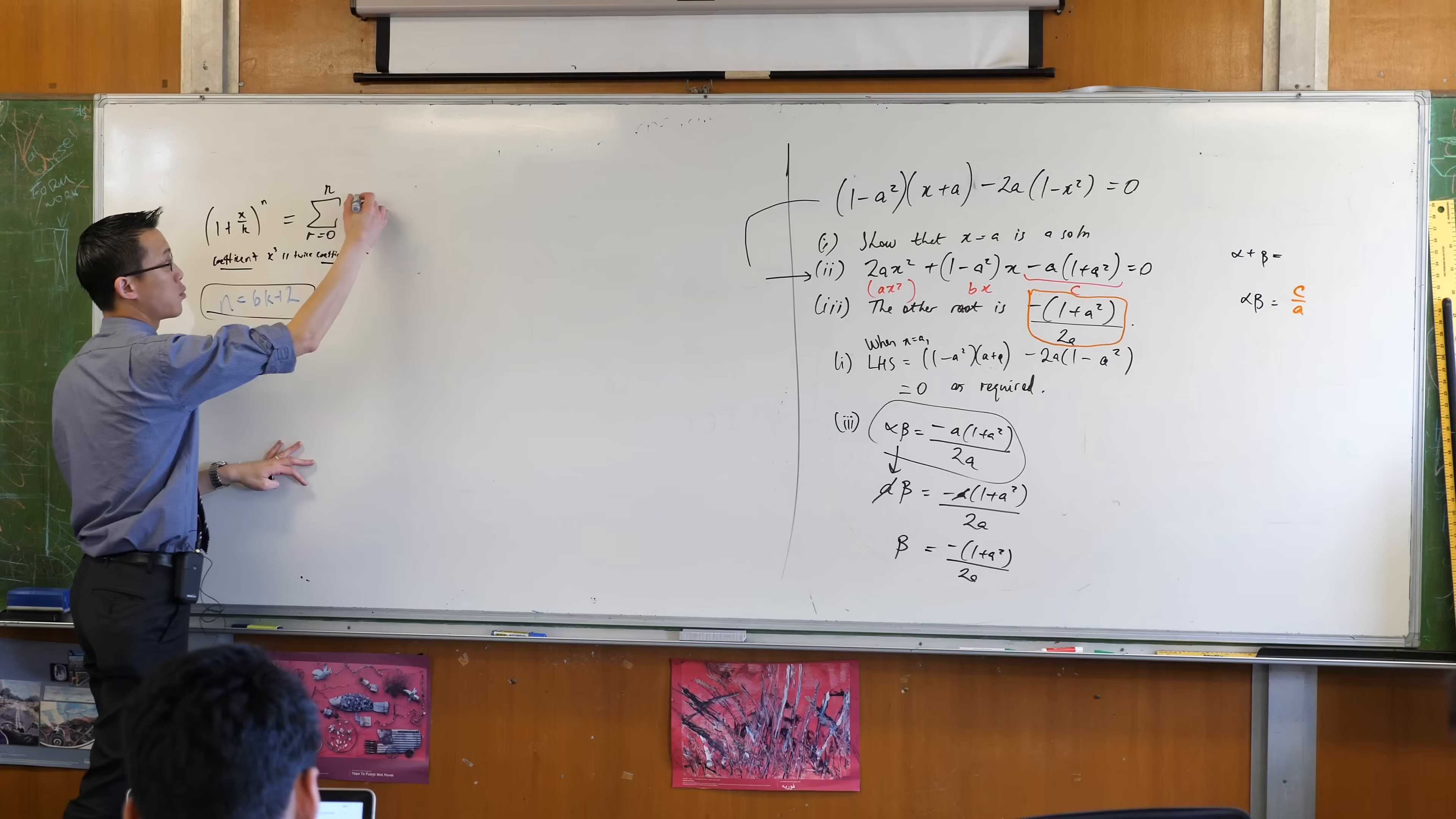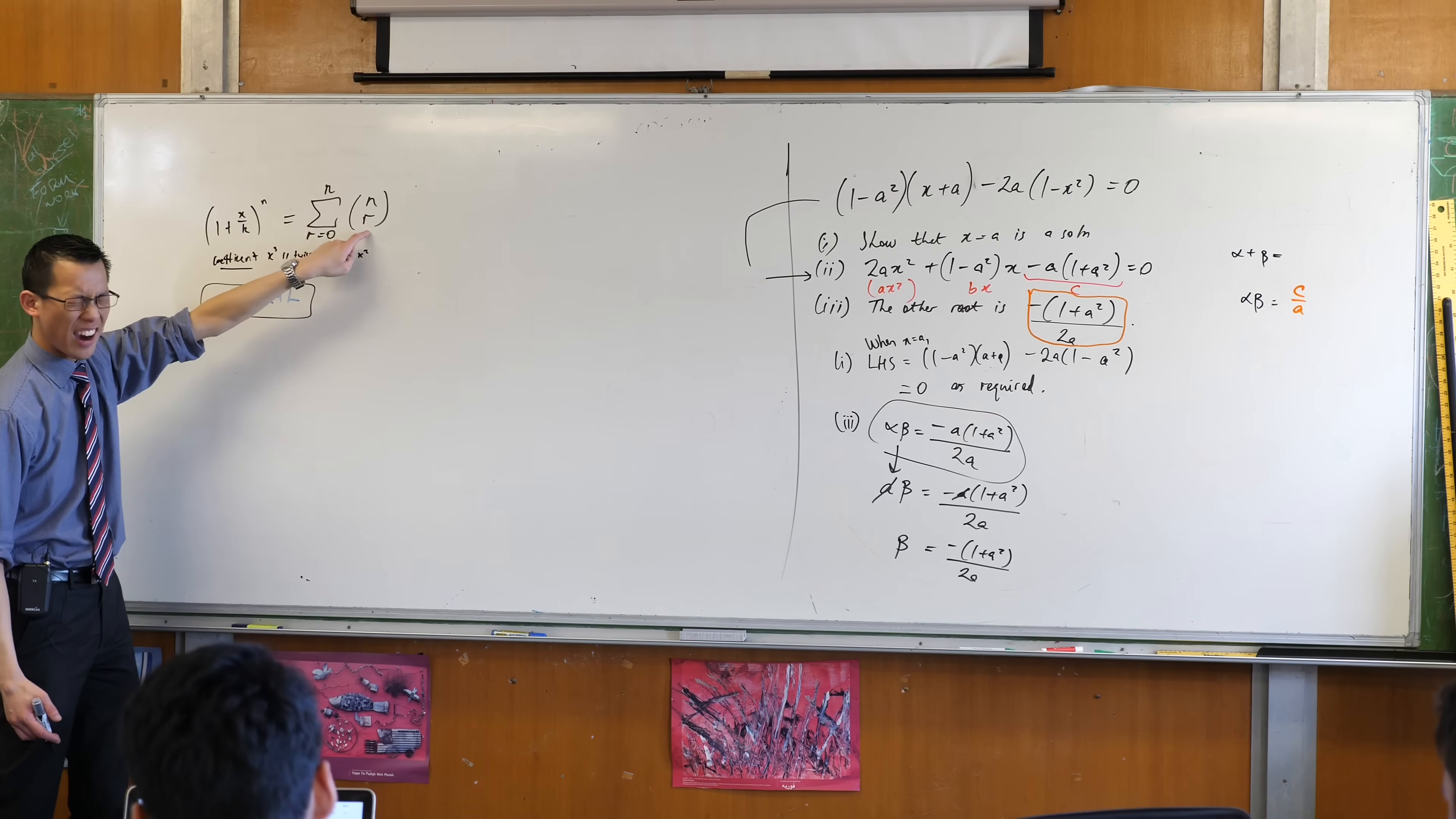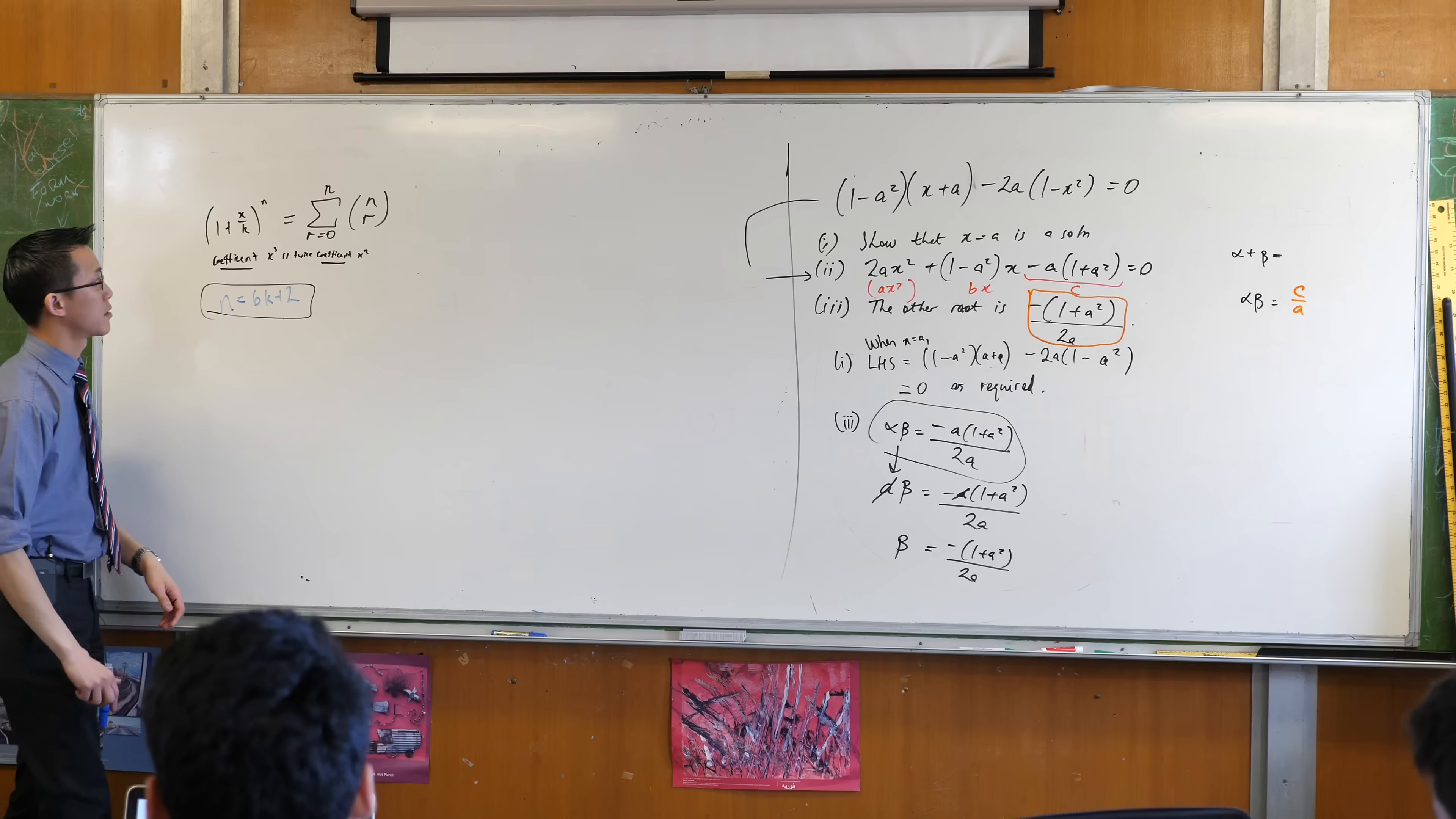What are the three components that always occur in every single term? So the first one is the binomial coefficient. Now in this case, if this was the power of 3, then this would be 3 choose 0, 3 choose 1, etc. This time the power is N, so that's why there's an N up here, and the R signifies which term am I looking at right now. There's the binomial coefficient, and then you've got some of these and some of these.